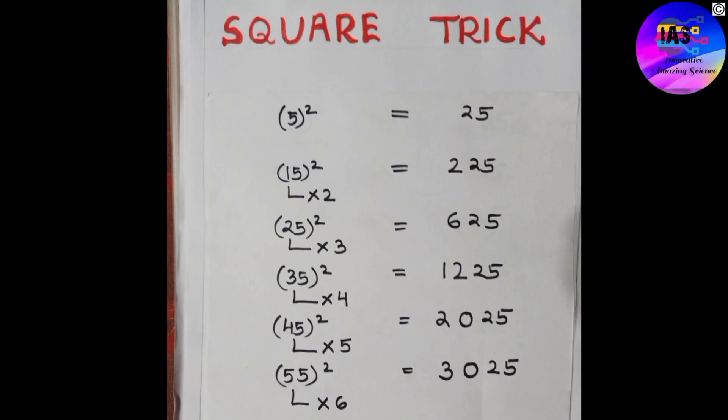With the help of this square trick you can find answers of any digit, let it be 2 digit, 3 digit, 4 digit, but you have to remember the last number should end with 5.